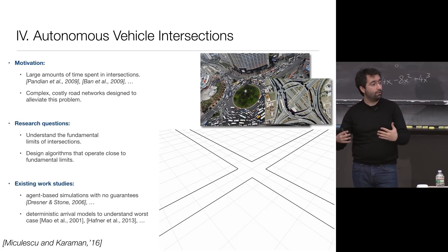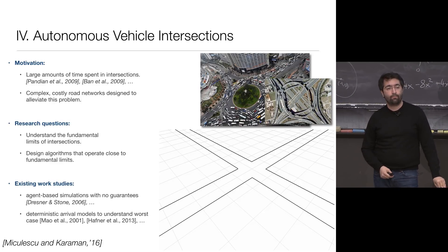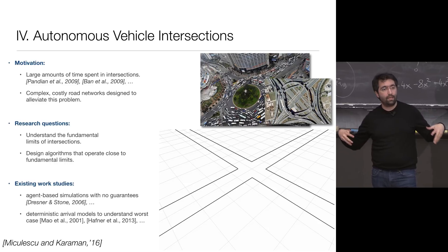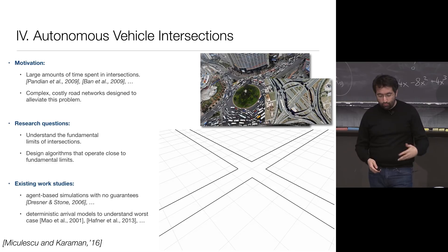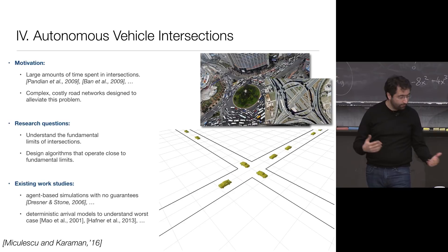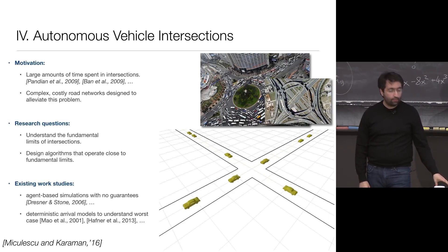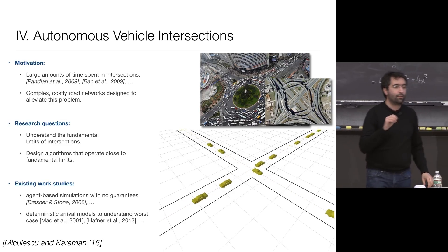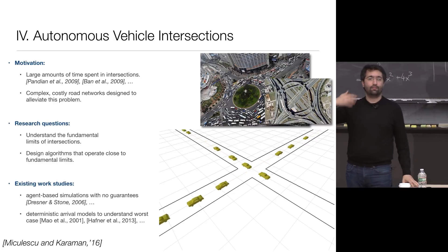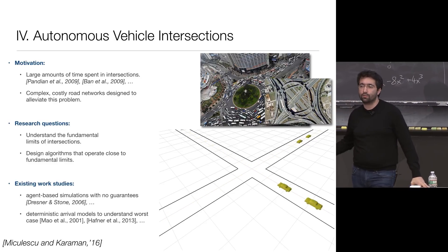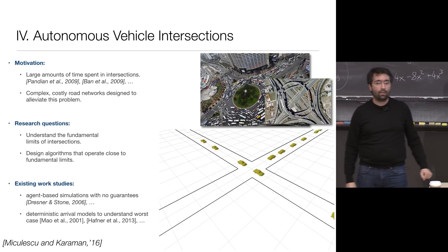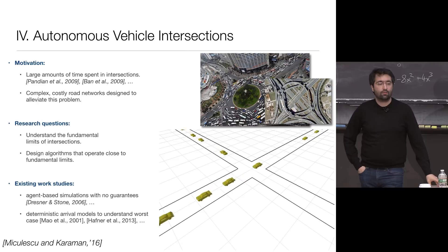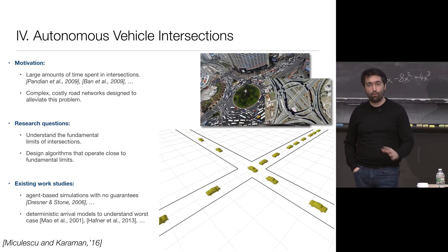Imagine you have a whole bunch of vehicles coming to an intersection. Suppose they're fully autonomous — how would you make it so they pass through as fast as possible? If you really utilize algorithms to do that, here is what it would look like. You would have vehicles coming in — you probably don't want to sit in this vehicle — but just to understand the fundamental limits and how far you can push these things. It looks like they're getting very lucky, but really they're just speeding and slowing down just enough to avoid one another.